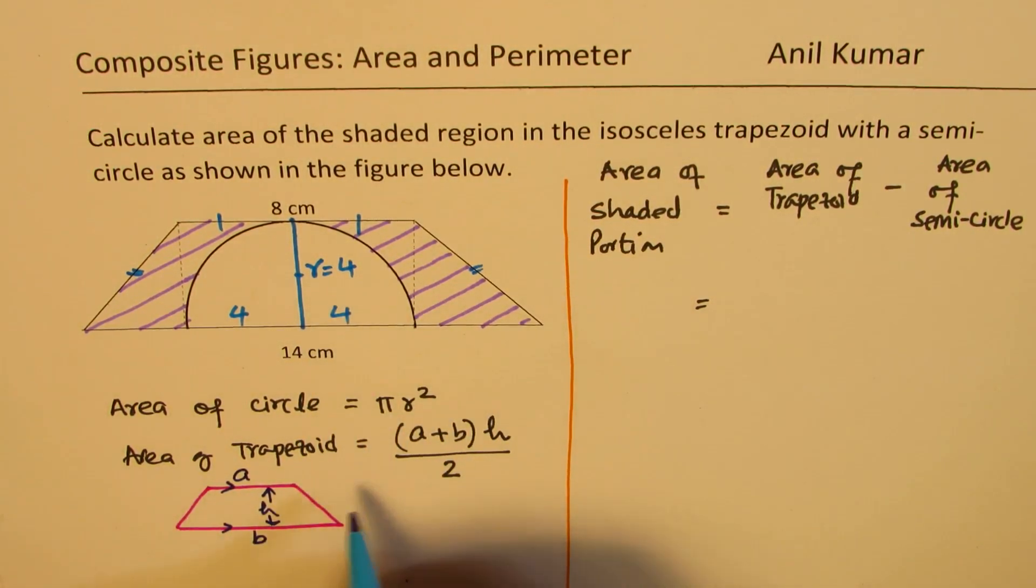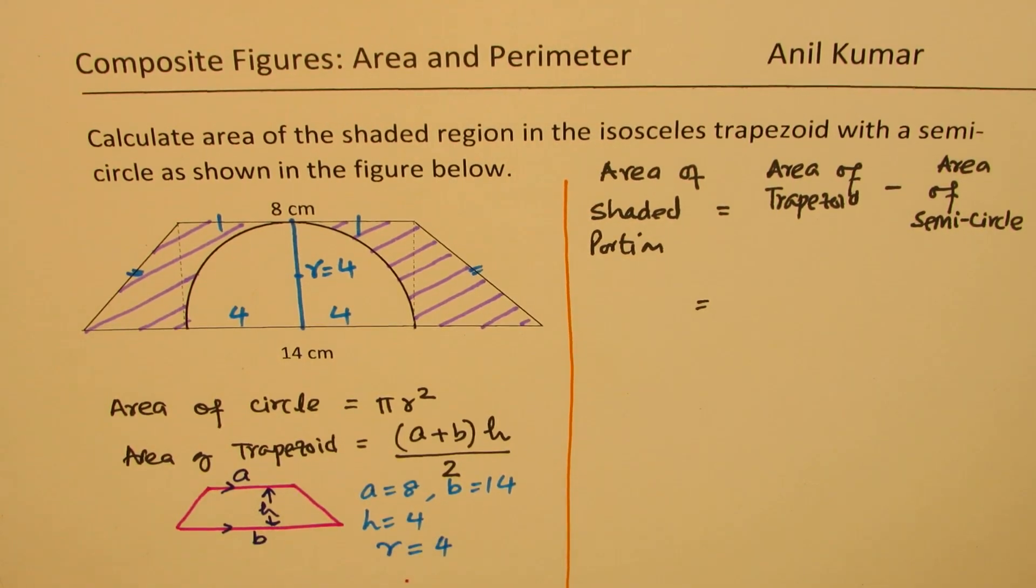So in our case, we can write that A equals 8, B equals 14, and H equals 4. So we get the area for trapezoid. And we know the radius R is also equal to 4. So using these, we can always find the area of the portion.